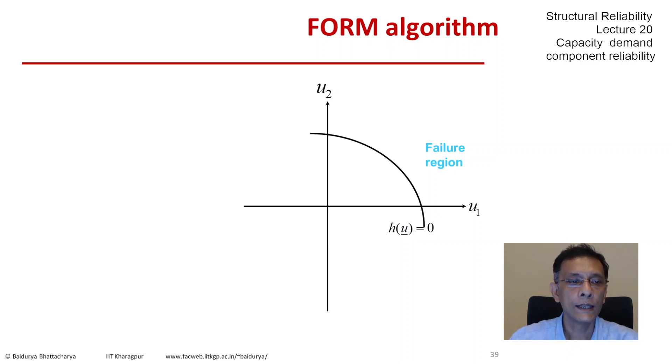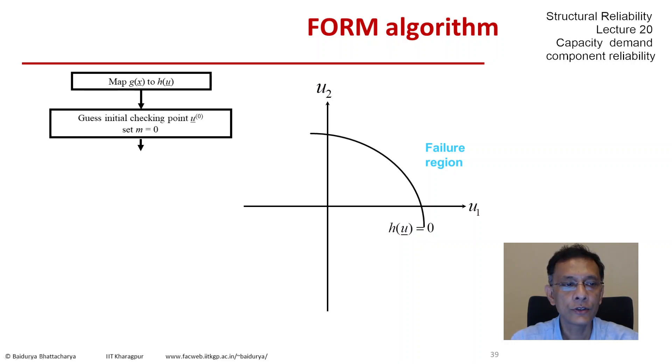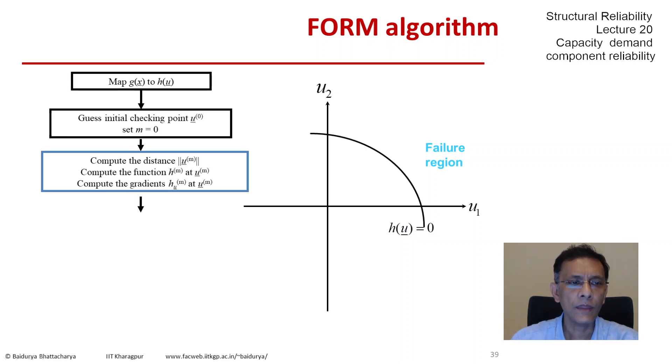Let's go step by step. We obtain h, and we always have to have an initial guess. So let the initial guess be u, where the superscript indicates the iteration number. We're talking about the zeroth iteration. Then we compute the distance from the origin to this initial guess and compute the functional value at that point.